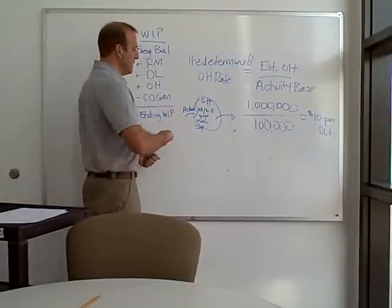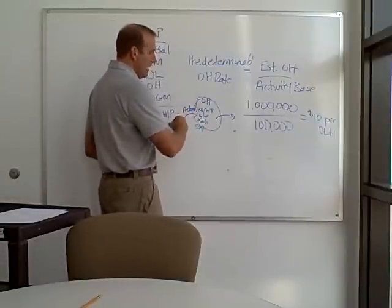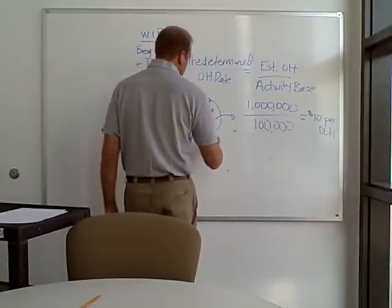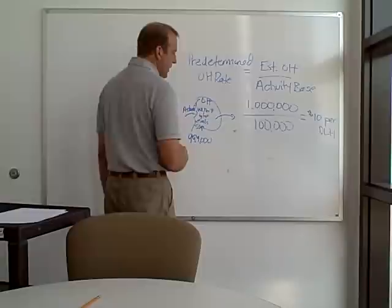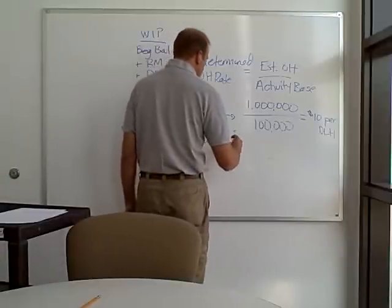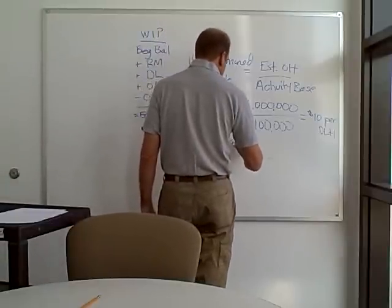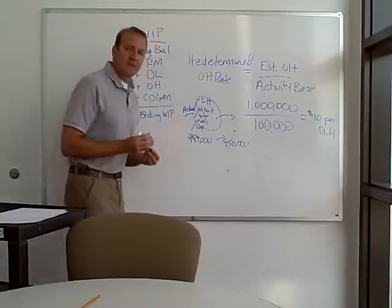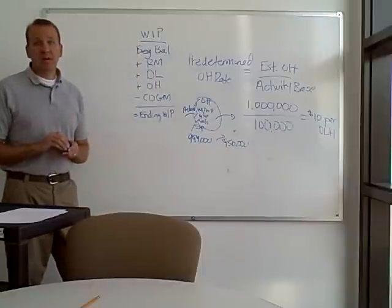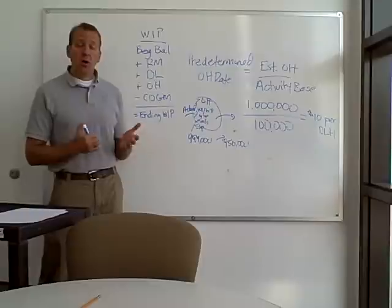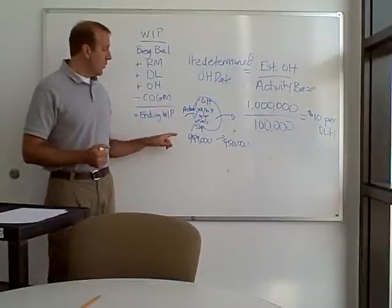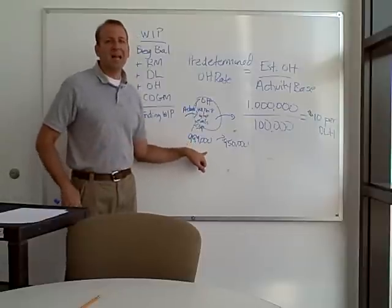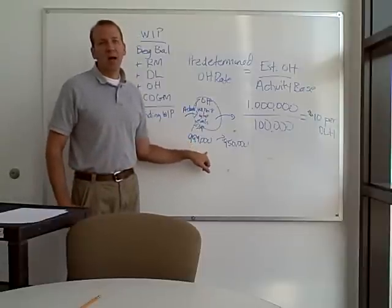At the end of the year, you're going to have actual overhead going in — let's say we have $999,000 of actual overhead in the account, but we only applied $950,000. If we put in $999,000 and only $950,000 came out, we'd still have $49,000 in there — so we under-applied overhead. We didn't apply enough.